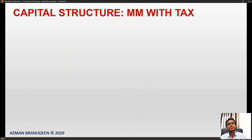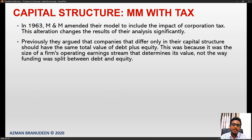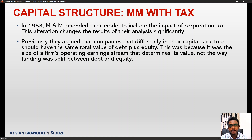That brings us to M&M with tax. In 1963, M&M amended their model to include the impact of corporation tax, which significantly changes the results of their analysis. Previously they argued that companies differing only in capital structure should have the same total value of debt plus equity, because it was the size of a firm's operating earning stream that determines its value.